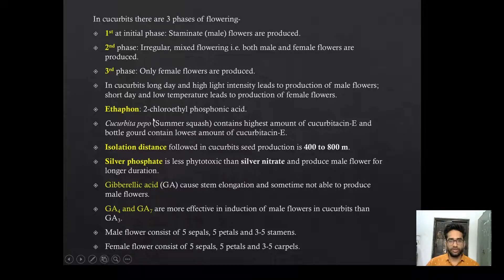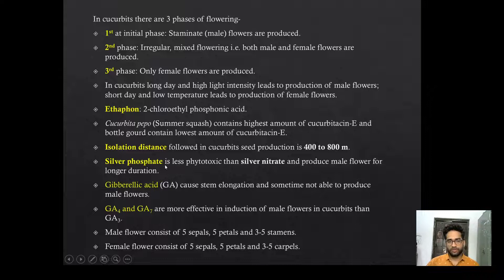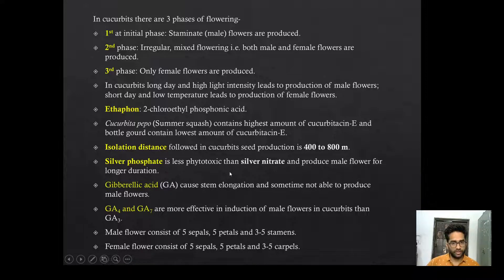Ethephon — the chemical name of ethephon is 2-chloroethyl phosphonic acid. Remember this. Among Cucurbits, summer squash contains the highest amount of Cucurbitacin E, and bottle gourd contains the lowest amount. Isolation distance for seed production in Cucurbits is 400 to 800 meters. Silver thiosulfate is less phytotoxic than silver nitrate. Chemicals like silver thiosulfate, gibberellic acid, and others are used in sex determination in Cucurbits. Silver thiosulfate produces male flowers for a longer duration. GA4 and GA7 are more effective for male flower induction as compared to GA3.